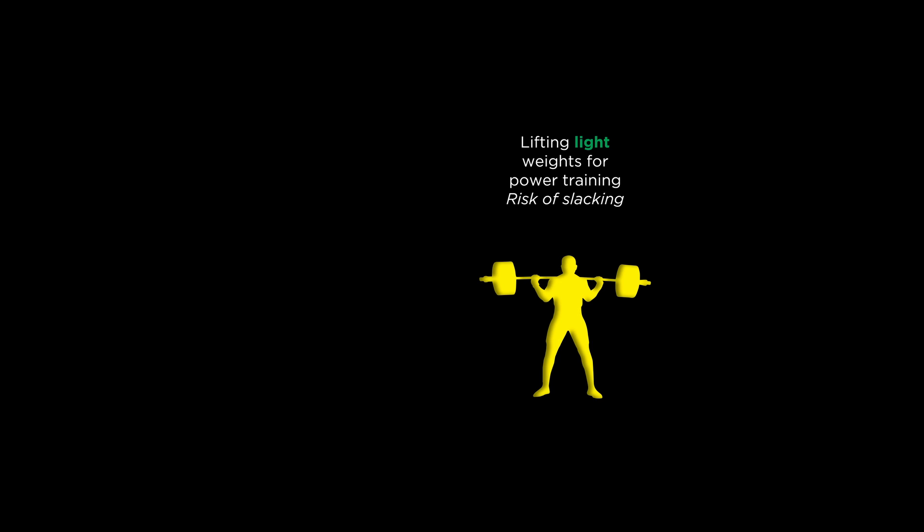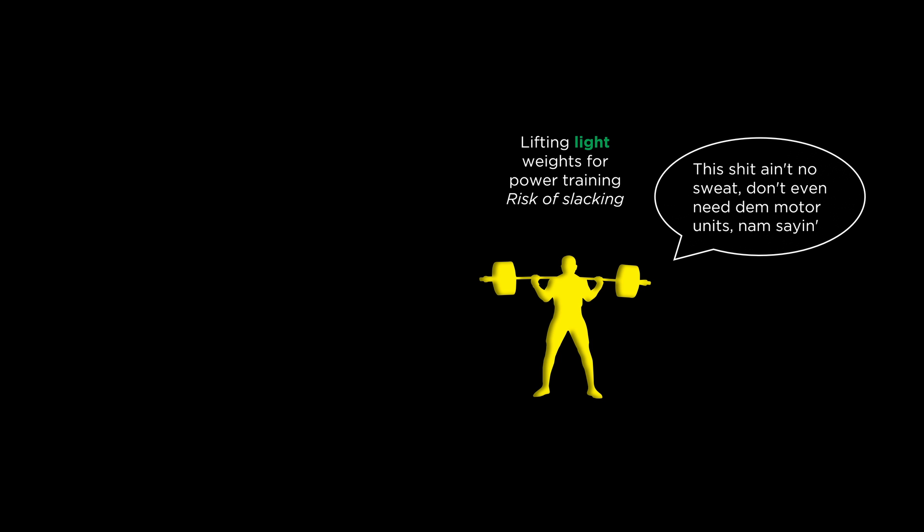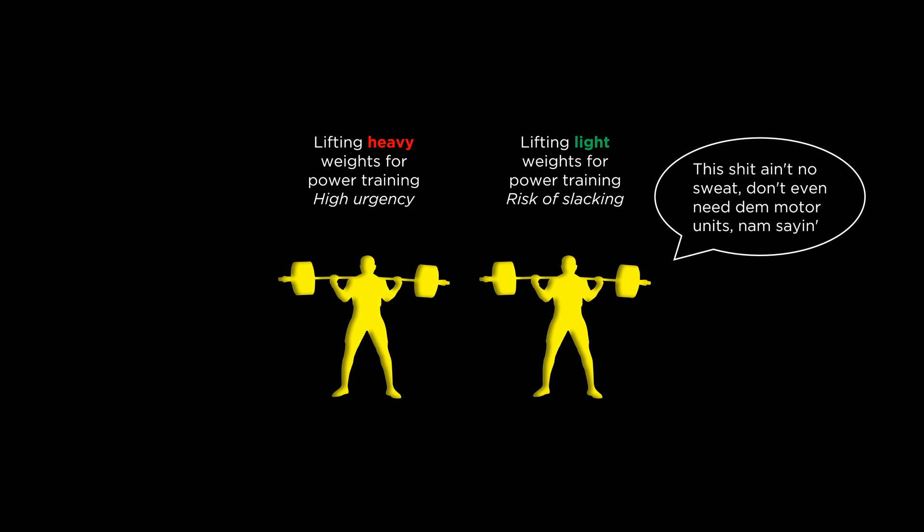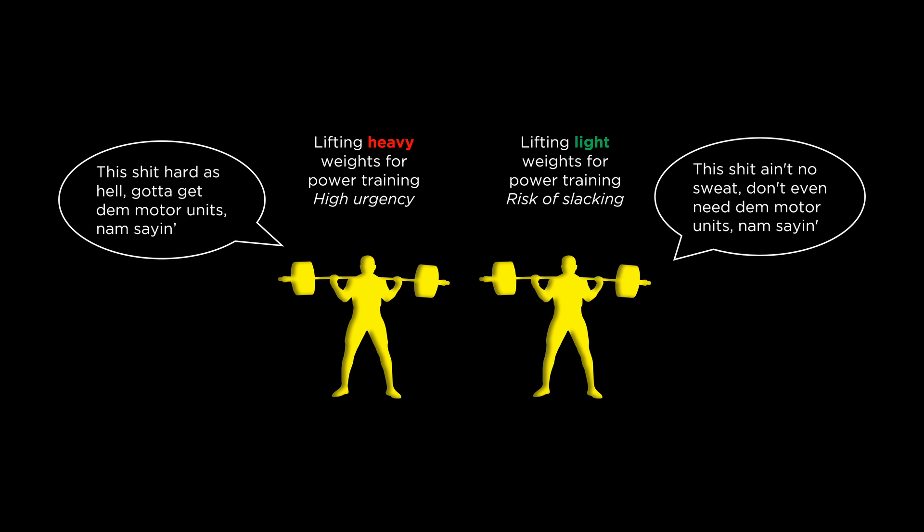In contrast, lifting light weights fast, which a lot of strength and conditioning coaches will preach sometimes, is often a big problem for beginner athletes, because they take the light weight for granted and put less than optimal effort. They are simply exercising instead of training for explosive power. This is a skill that needs repetition — approaching the concentric portion of your lift with high mental intent. And it just happens to be that it's easier to produce high mental intent when the weights are heavier.